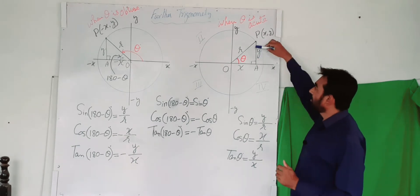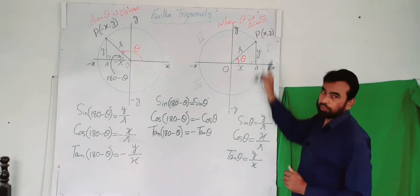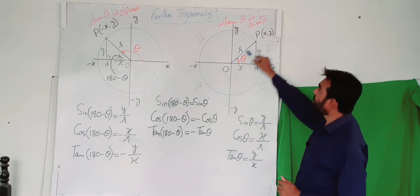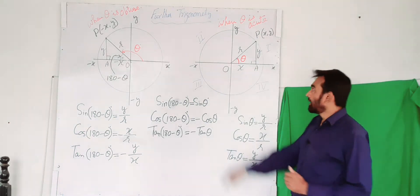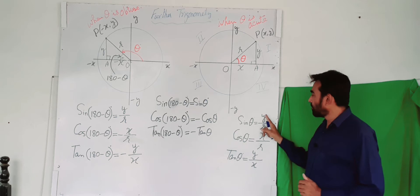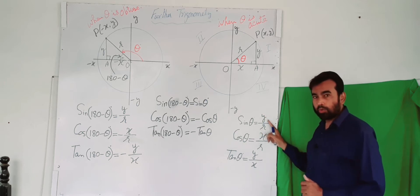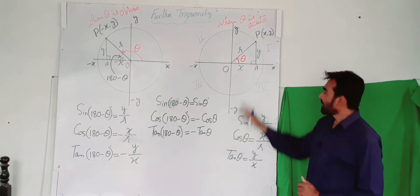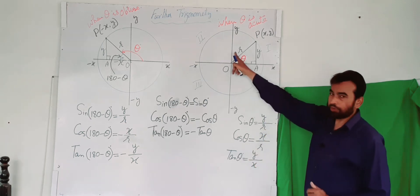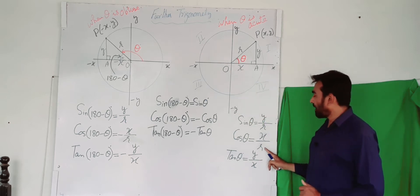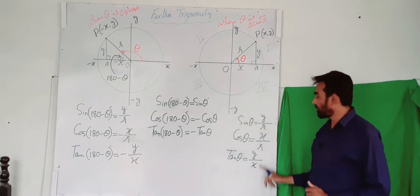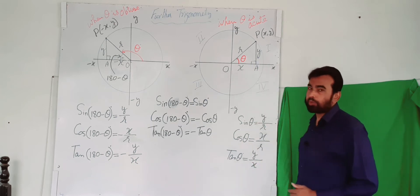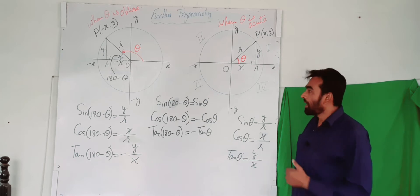According to this right angle triangle, against theta this is the opposite side and this is the adjacent side. OP is the radius of the circle. As you know, sin θ = perpendicular/hypotenuse = y/r, cos θ = base/hypotenuse = x/r, and tan θ = perpendicular/base. So these three trigonometric ratios are now clear.